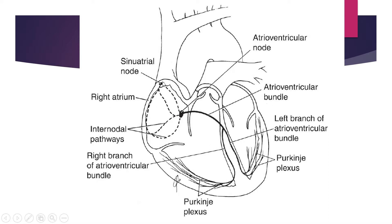Looking at the diagram of the heart, you can see the five components of the conducting system. The first component, also called the pacemaker of the heart, is the SA node. The impulse passes from the SA node to the AV node, the second component. From the AV node, the atrioventricular bundle comes out. This AV bundle then divides into two branches: the right branch and the left branch, which give rise to the terminal conducting fibers and Purkinje fibers.